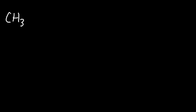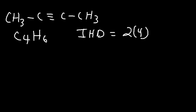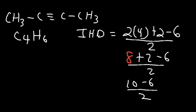Now what about a triple bond? Let's say we have 2-butyne. What is the IHD value of this compound? We have 4 carbons and 6 hydrogens. Using the formula: (2×4 + 2 − 6) / 2. 2 times 4 is 8, plus 2 is 10. 10 minus 6 is 4, and 4 divided by 2 is 2. So the IHD value is 2. A triple bond has an index of hydrogen deficiency of 2.